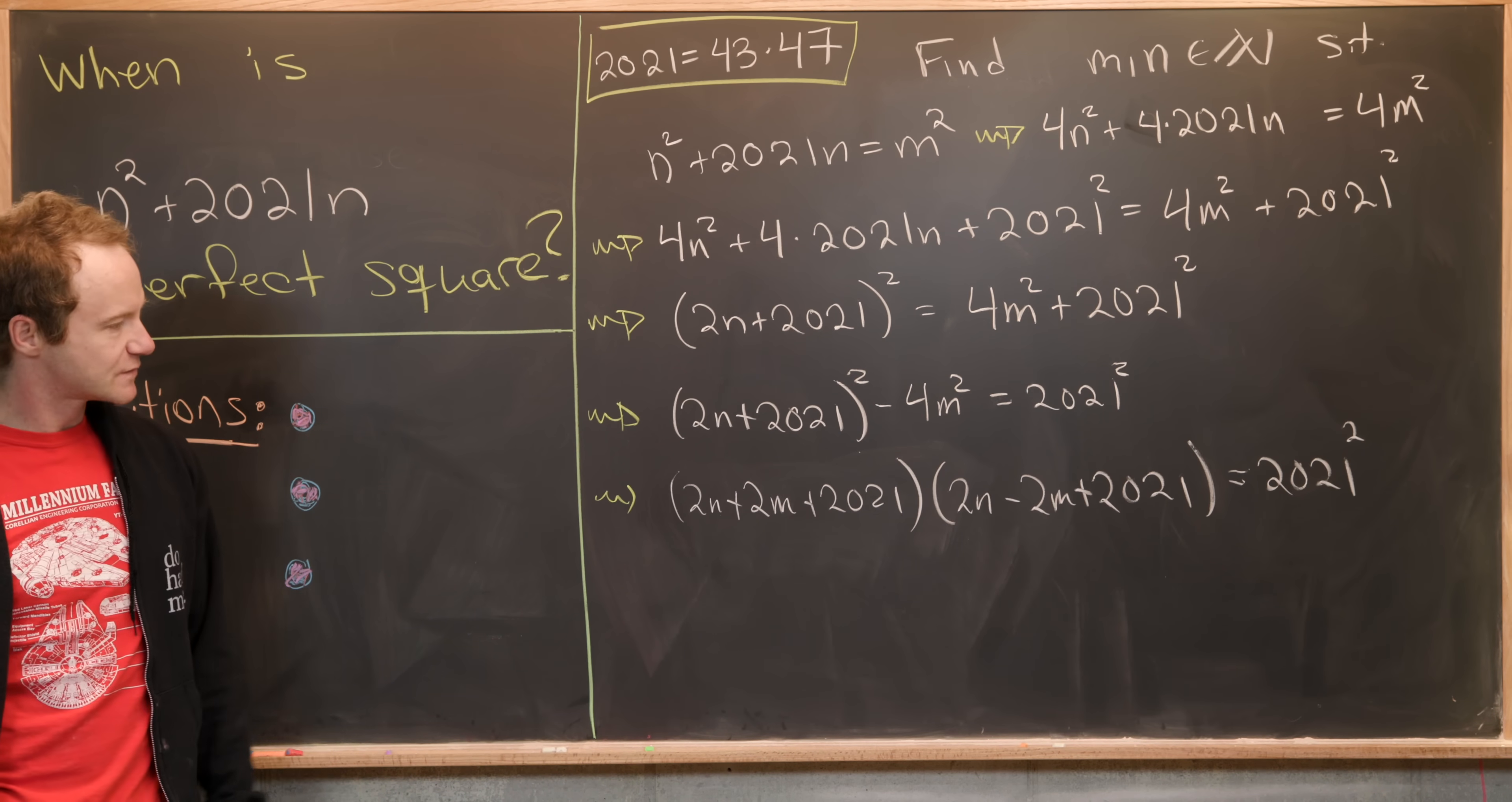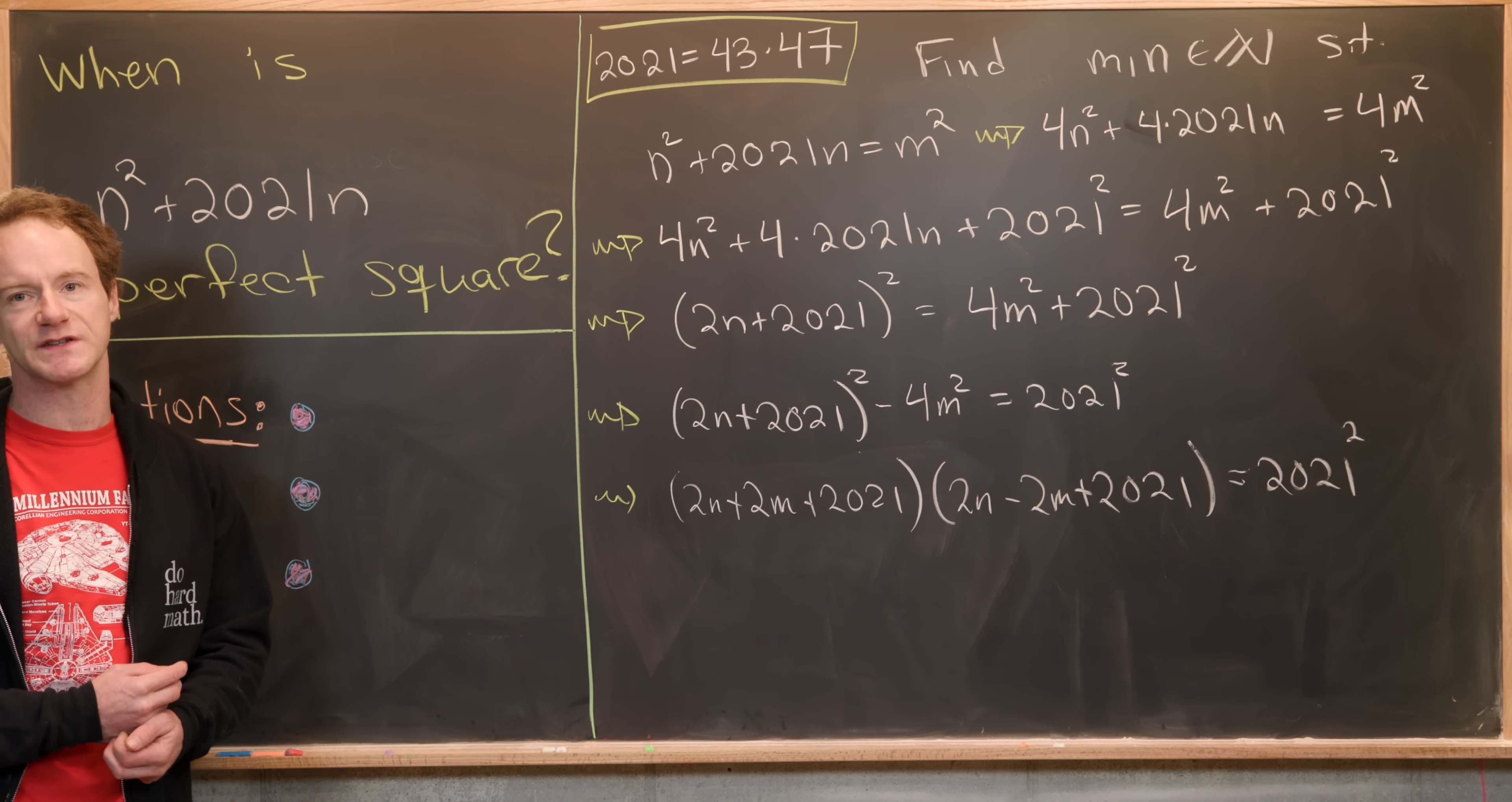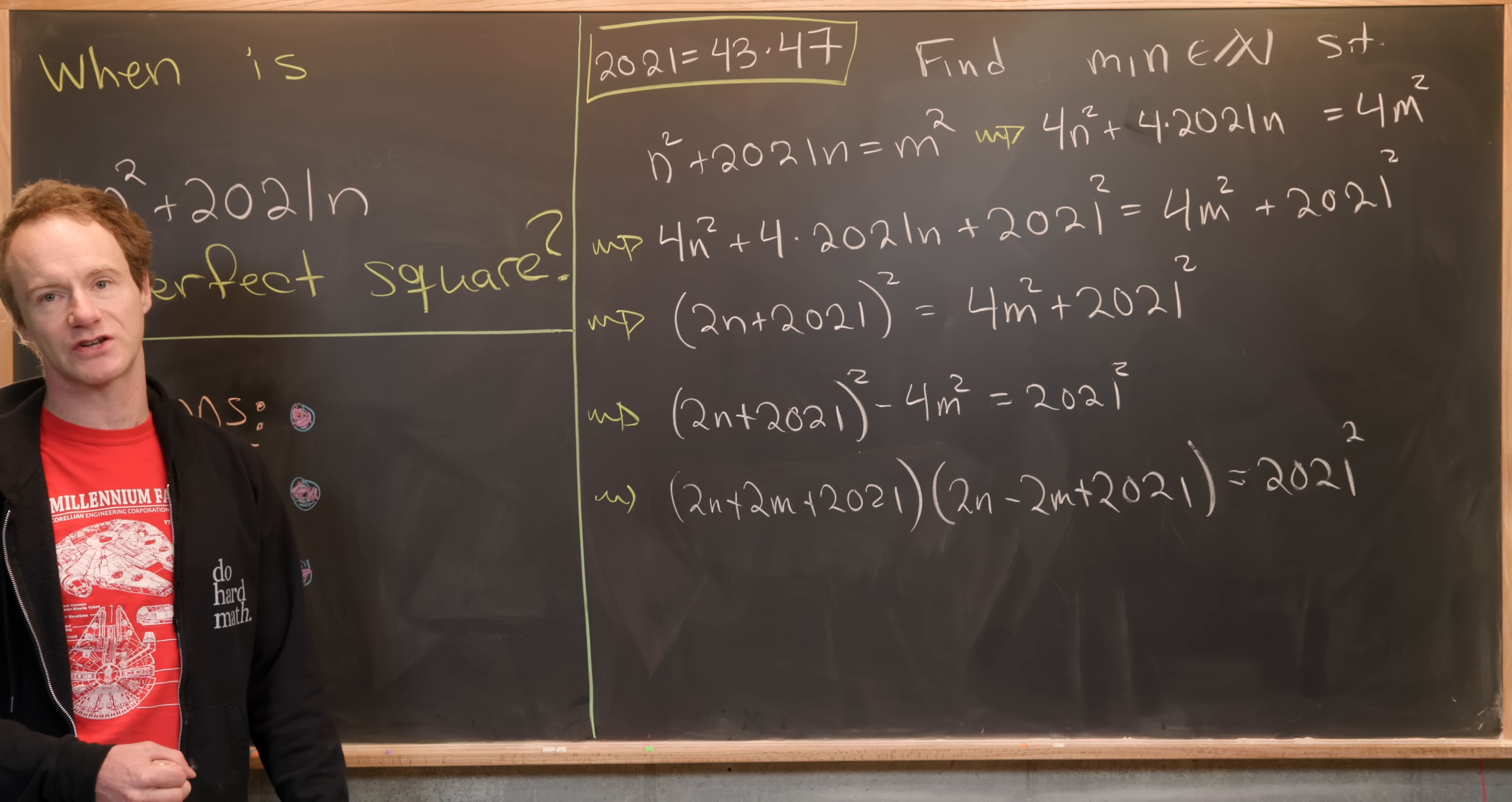We'll have (2n + 2m + 2021)(2n - 2m + 2021) = 2021². So next, what we want to notice is that we have factored 2021 squared as the product of two natural numbers.